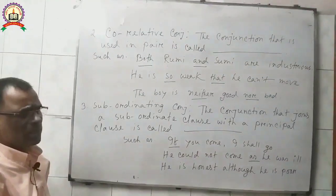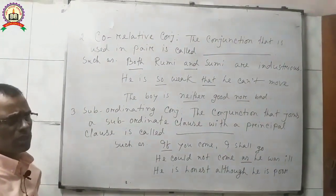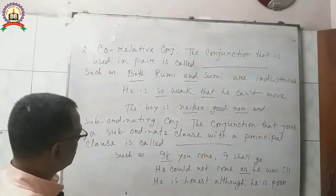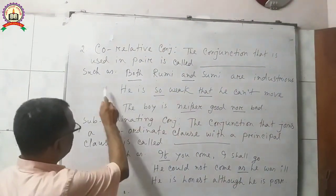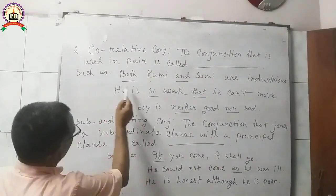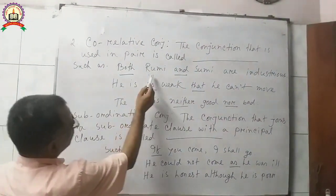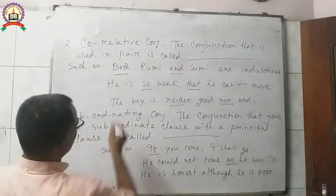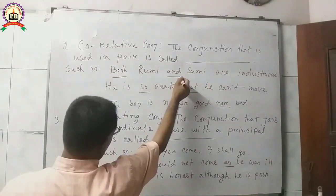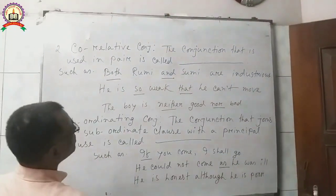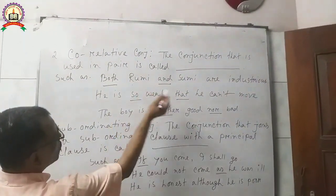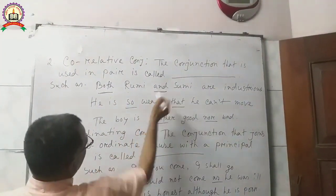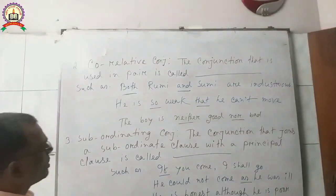Think of it like a pair of shoes — not a single shoe, but a pair. You must remember this. Follow the example: 'Both Dhumi and Shumi are industrious.' Here, 'both...and' is the co-relative conjunction.